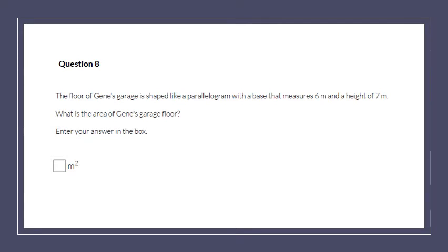Number 8. The floor in Jean's garage is shaped like a parallelogram with a base of 6 and a height of 7. What is the area of the garage floor? So I always write my formula first. It says the base is 6 and the height is 7. When I multiply 6 times 7, I get 42. And I need the units. That is meters. Area is always squared.